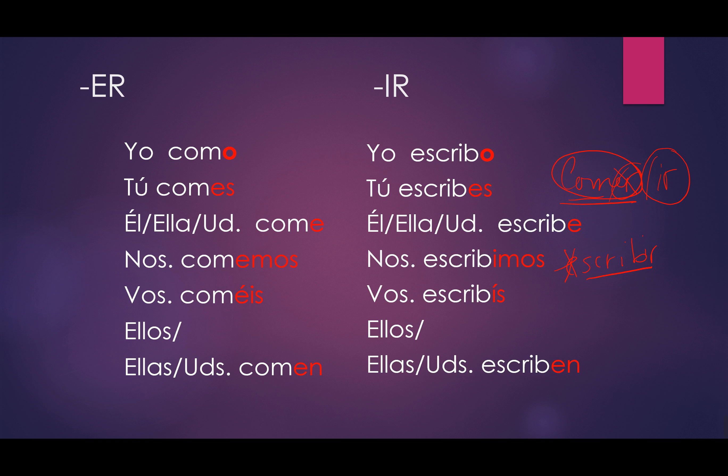So you're going to see that all of the endings are exactly the same except nosotros and vosotros are a little bit different. And you're going to find this across Spanish, across verb tenses, whatever — nosotros and vosotros tend to always be a little bit different. This is going to come up when we start doing stem-changing verbs in Chapter 3. Muy bien.